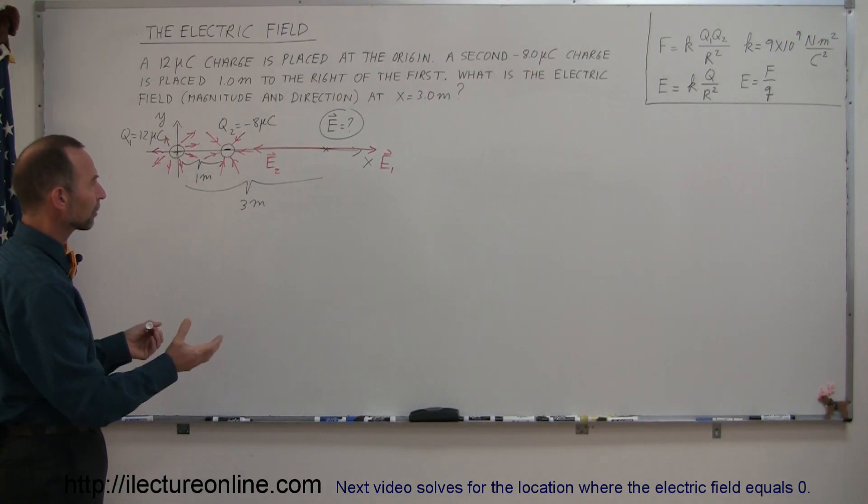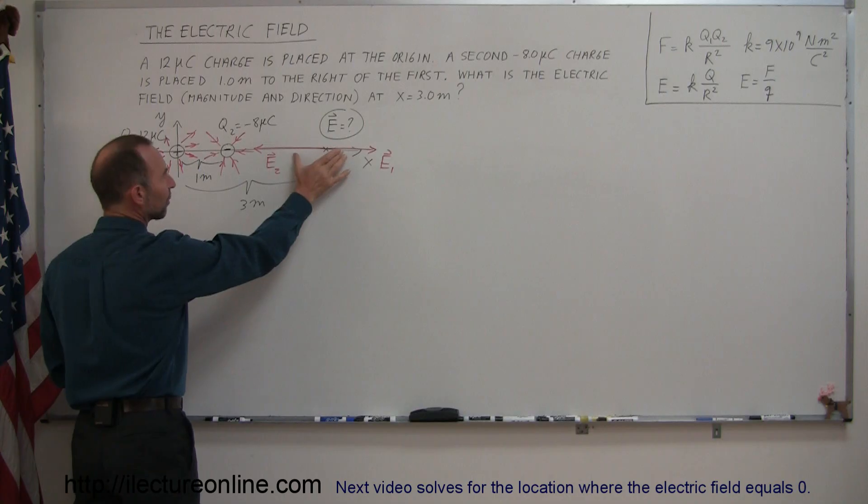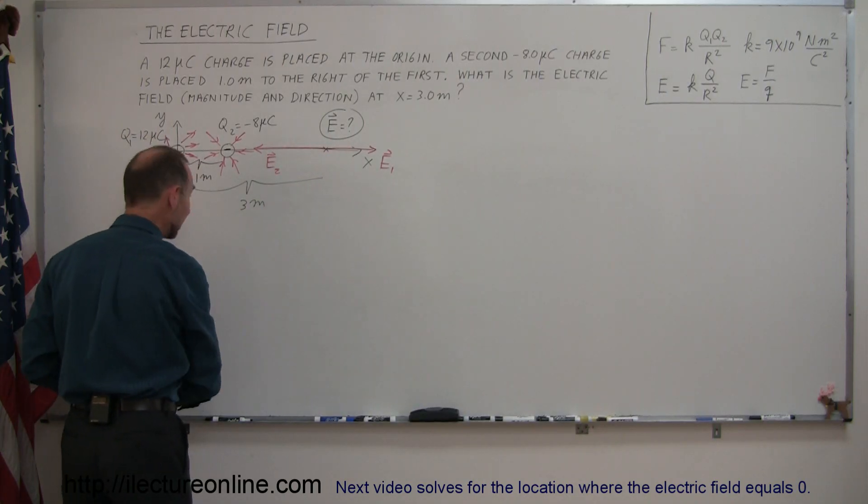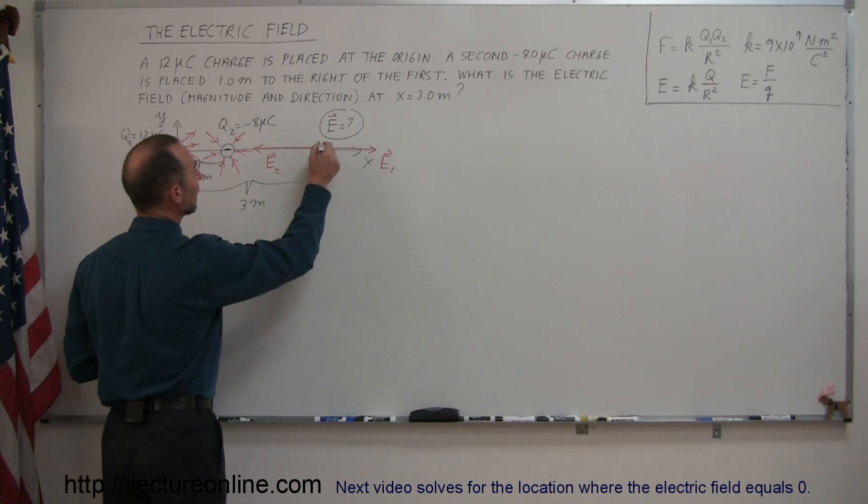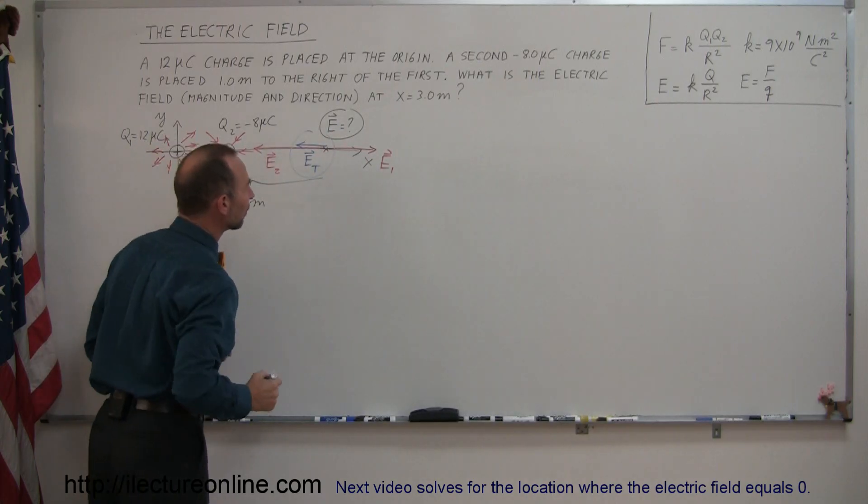Now to find the net electric field, I need to do a vector sum of these two. If E2 is bigger than E1, that would mean I would end up with a net electric field to the left, E total, and this is what I'm looking for.